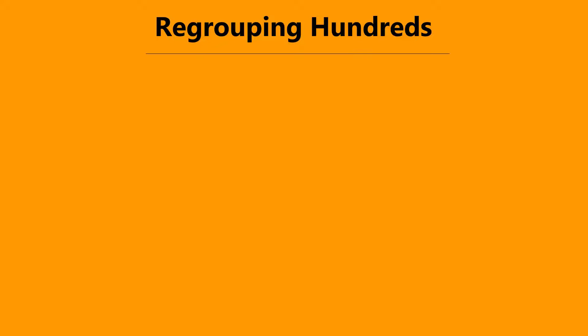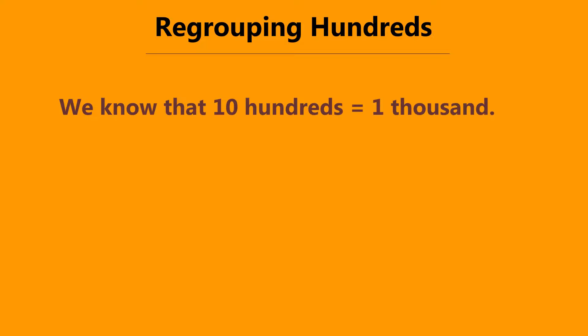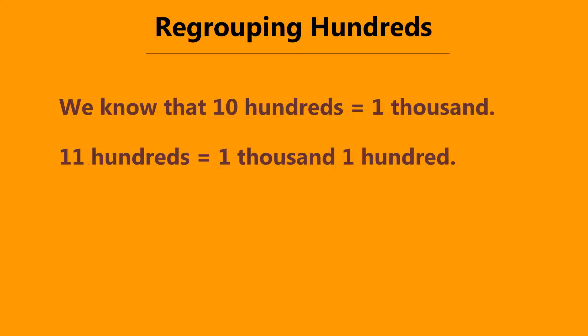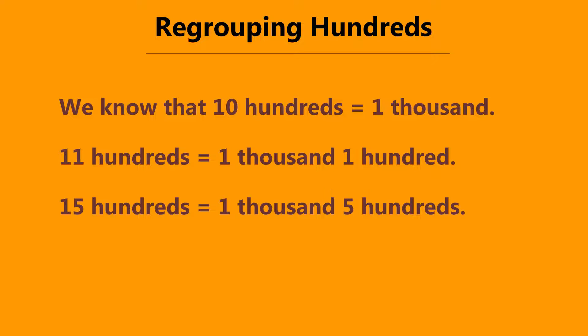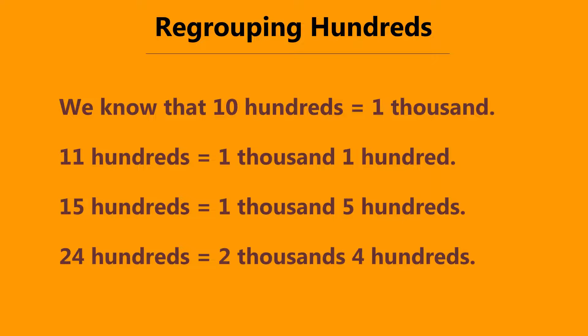Regrouping hundreds. We know that ten hundreds are equal to one thousand. Eleven hundreds are equal to one thousand one hundred. Fifteen hundreds are equal to one thousand five hundreds. Twenty-four hundreds are equal to two thousands and four hundreds.